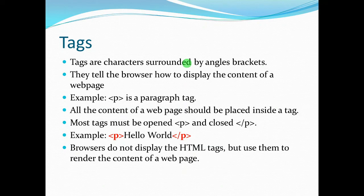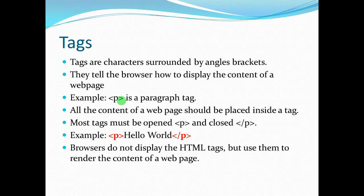Tags tell the browser how to display the content of a web page. A simple example is a paragraph tag. Tags begin with an opening bracket, a character, and a closing bracket, as you can see in the paragraph tag. All components of a web page are usually placed inside a tag, and there is usually an opening and a closing tag.